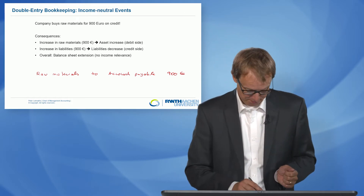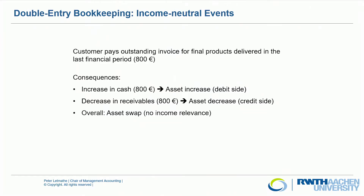Next example: a customer pays an outstanding invoice for final products delivered in the last financial period. When the customer pays us, we have an increase in cash — an asset increase — so we book cash on the debit side. Beforehand, the customer owed us money, recorded as a receivable, which is also an asset. Now that the customer has paid, the receivable decreases by 800 euro. So it is cash to receivables, 800 euro — again an asset swap with no income relevance.